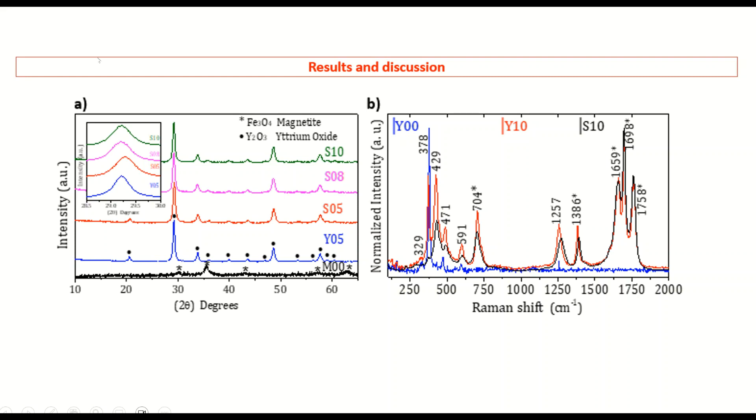With the X-ray diffraction patterns, we found the characteristic peaks of magnetite and yttrium oxide. And also, we found a shift in this peak. And that means that europium is inside of the crystal structure of yttrium oxide.